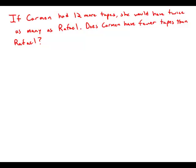So mathematically, what they're telling us is that if we added 12 tapes to Carmen, it would equal twice the number of tapes that Raphael has. So that's interesting. Let's look at the statements.